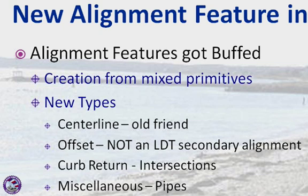I'm not saying that's definitely going to happen, but I would expect other types of alignments since there are some design problems we still can't solve easily with these new types. Most of the new type work — the offset alignments and the curb returns in particular — came because of the idea of intersections and applying an assembly set, working from where things connect instead of from the middle to the connections, which is what we've been doing before in Civil 3D.